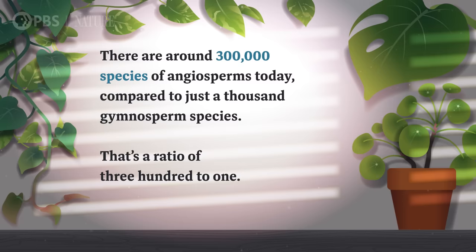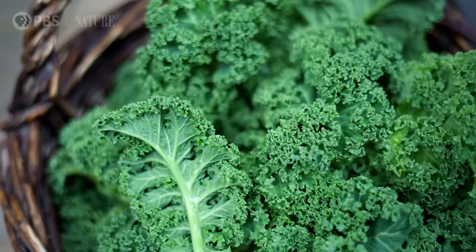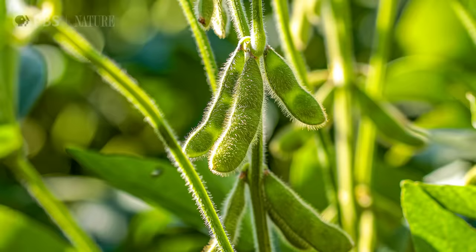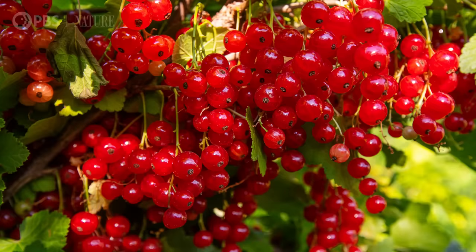There are around 300,000 species of angiosperms today, compared to just 1,000 gymnosperm species — a ratio of 300 to 1. And unless you're in the Arctic Circle, nearly every plant in your local environment is an angiosperm: oaks, cacti, grasses, orchids. Almost every plant you eat is an angiosperm too — like kale, rice, apples, carrots, and soybeans. But the amazing array of flowering and fruiting plants we have today wouldn't have been possible without those early gymnosperm seeds.